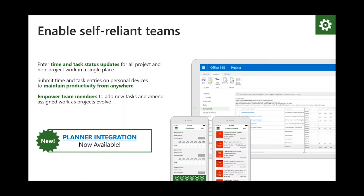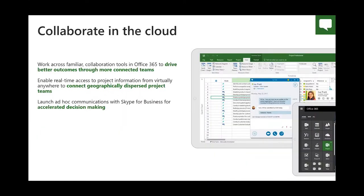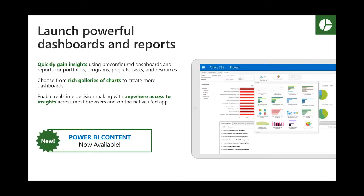Another timely feature is around self-reliant teams. The workforce is often mobile — not everyone is in the same room. Project of course, with the Essentials SKU, can be layered down to team members. There's also a new lightweight application called Microsoft Planner, which was released at the end of October and integrates directly into Project. So Project can serve people at the portfolio level as well as team members, and of course it integrates nicely with Office 365.